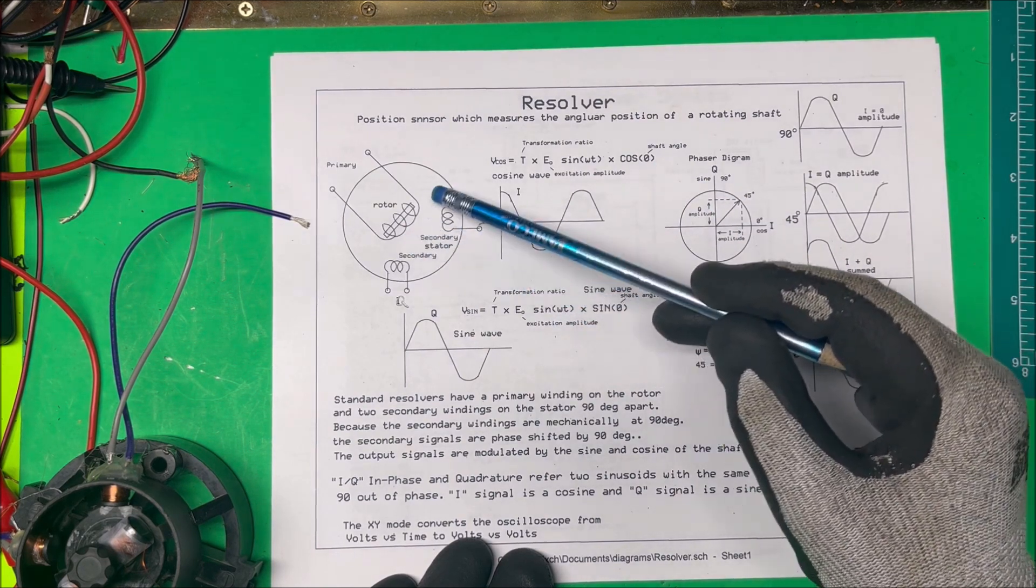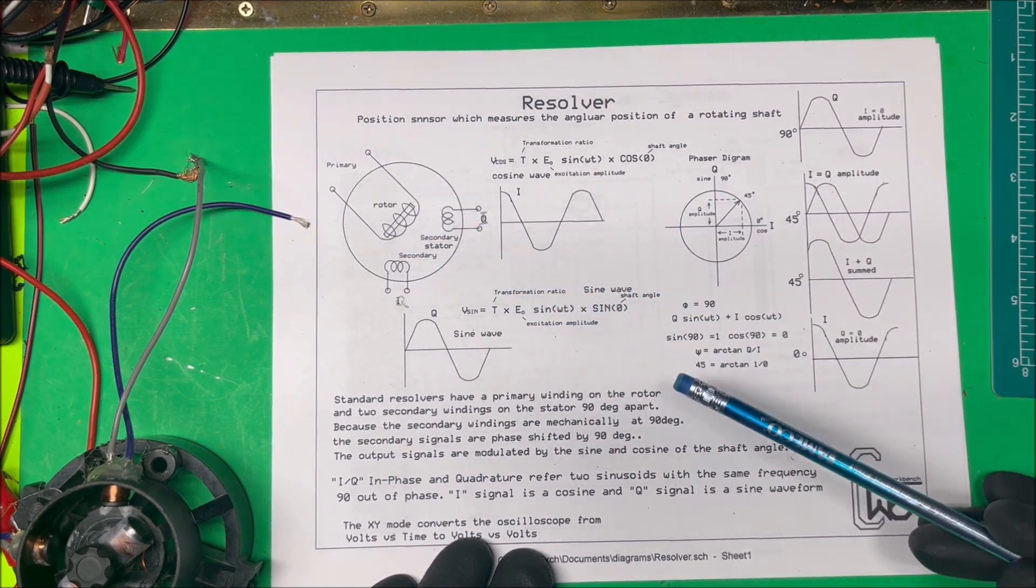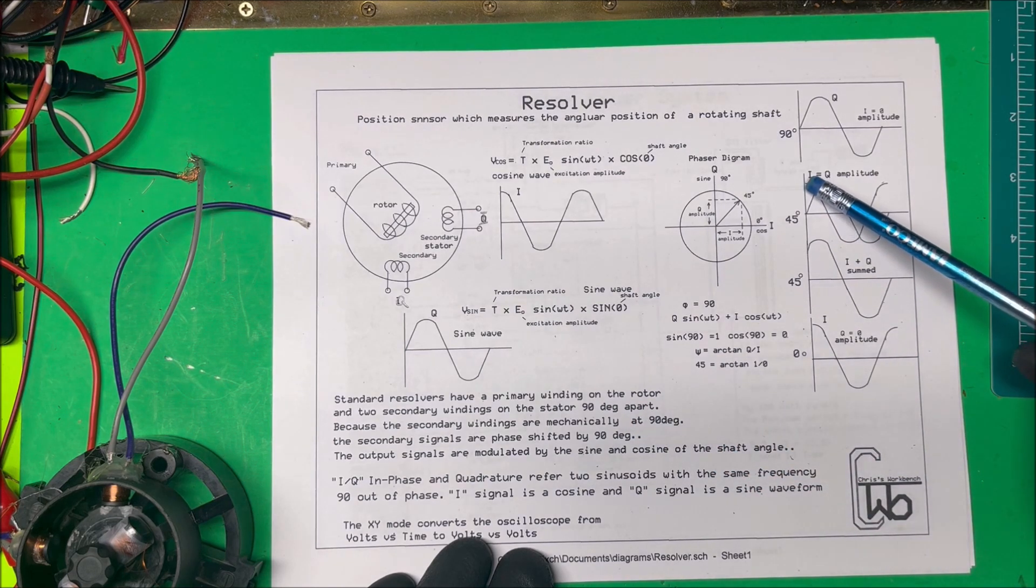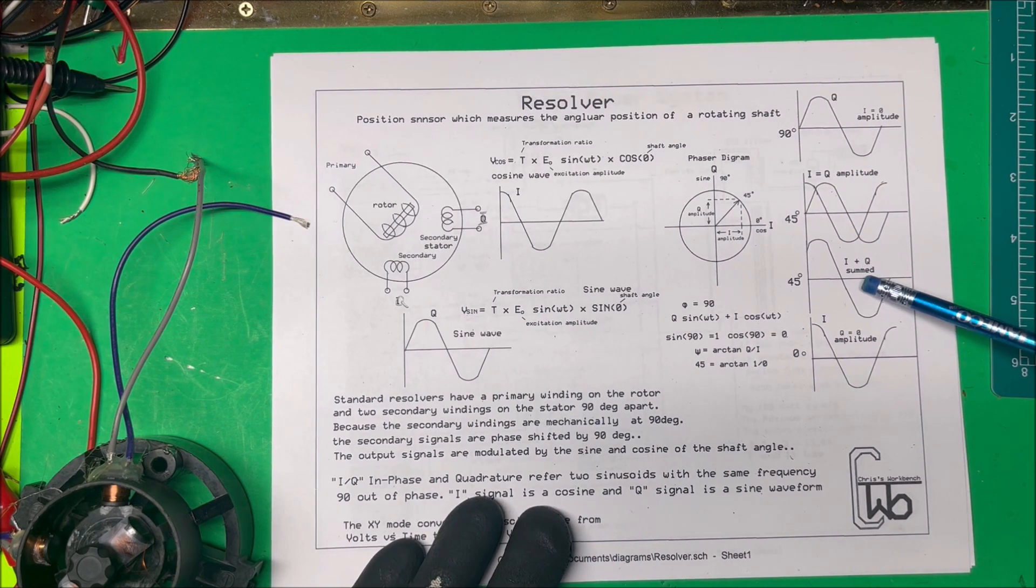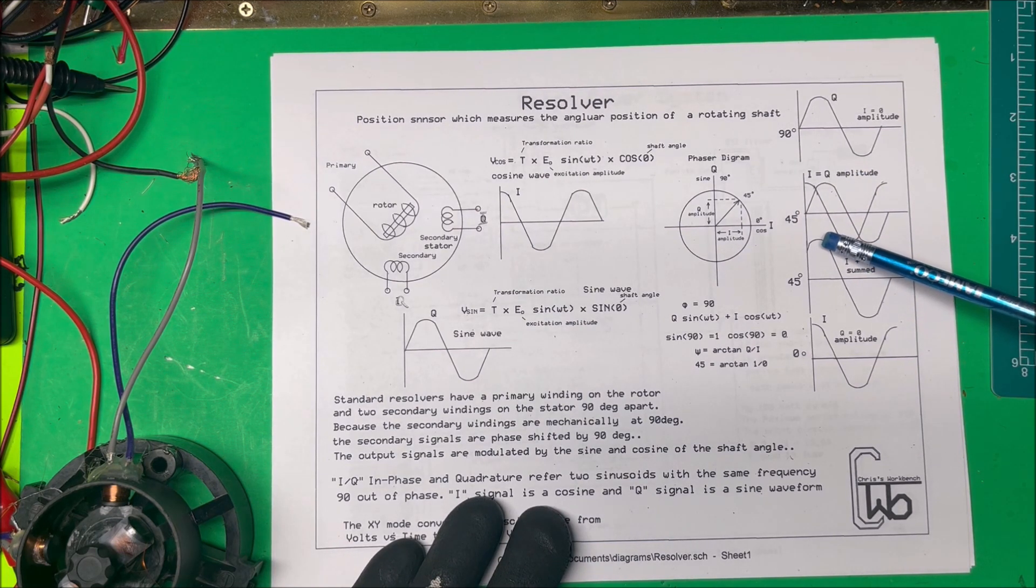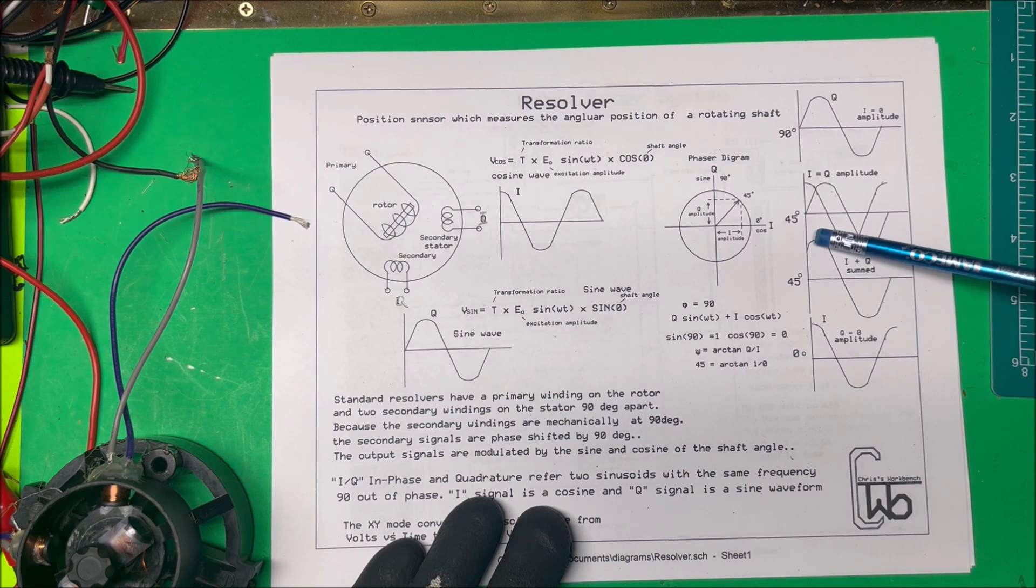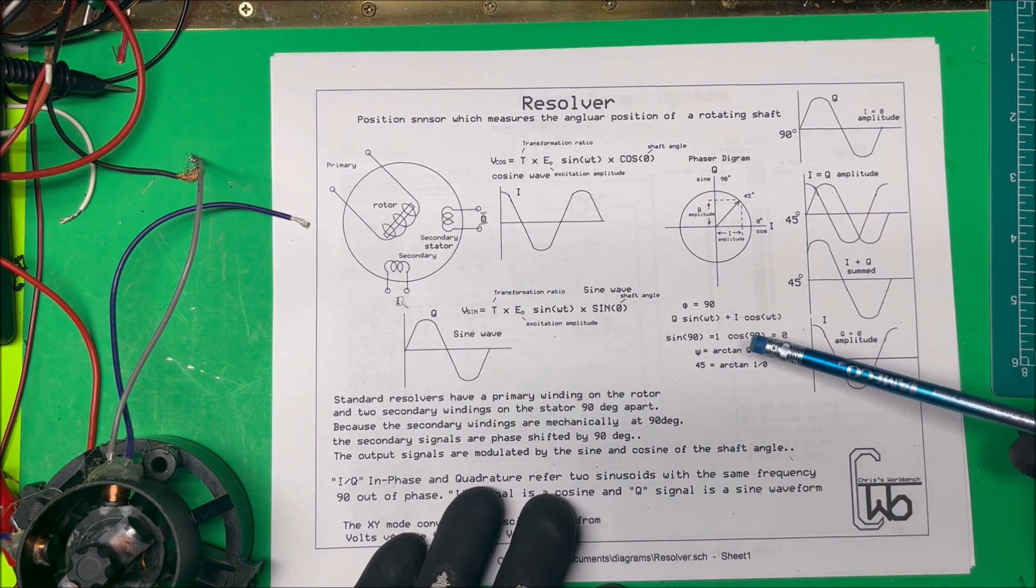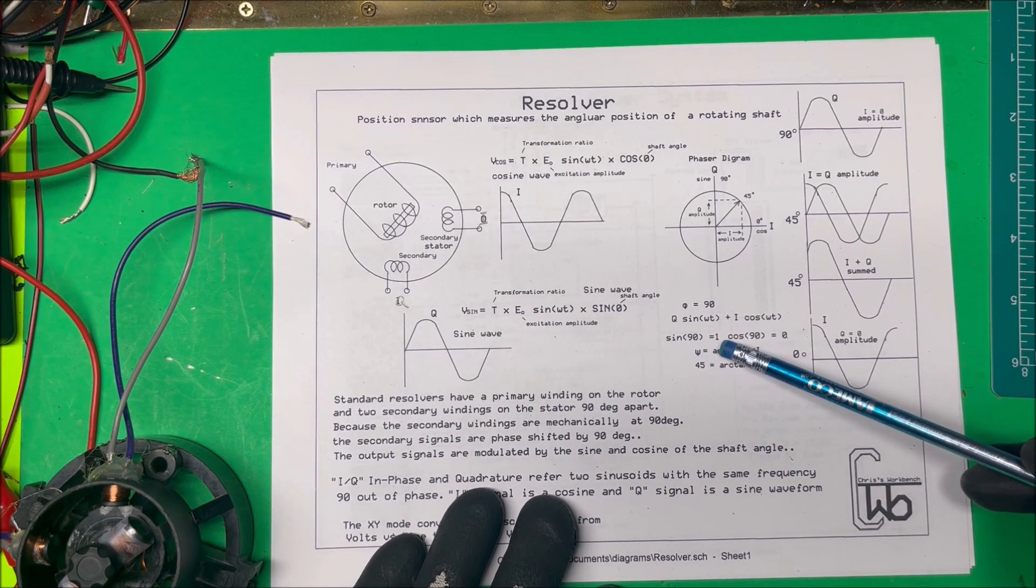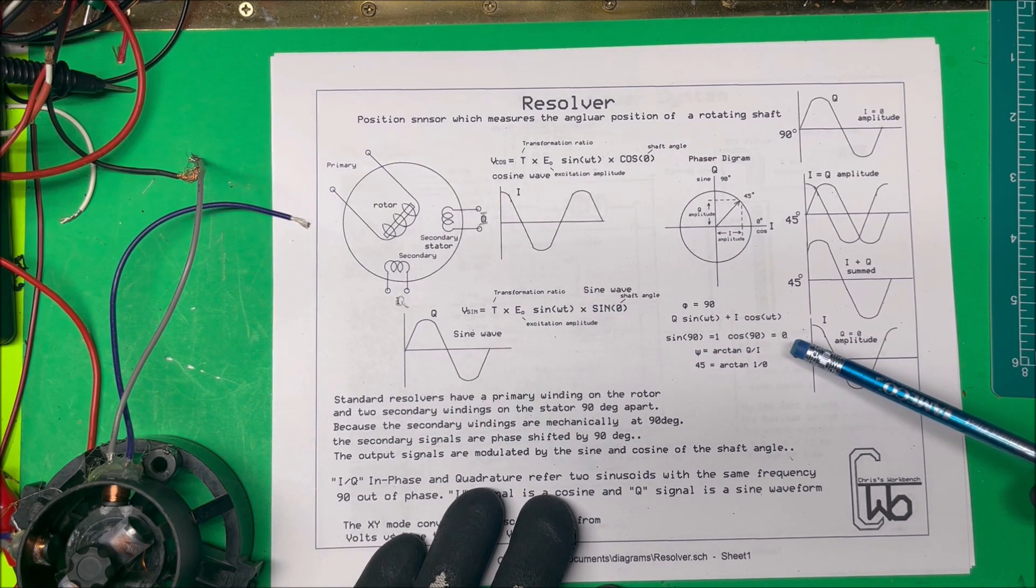And in this position here, let's say this is 45 degrees, we're over here we have our cosine and our sine wave here. And if we sum those together, we get a phase shift of 45 degrees. So now you can do it mathematically here. You can take the sine of 90 degrees is one cosine of 90 is zero and you take the tangent of one and that's going to be 45 degrees.